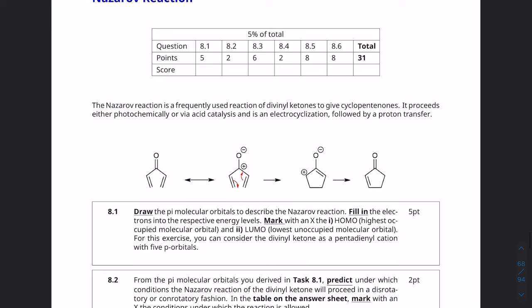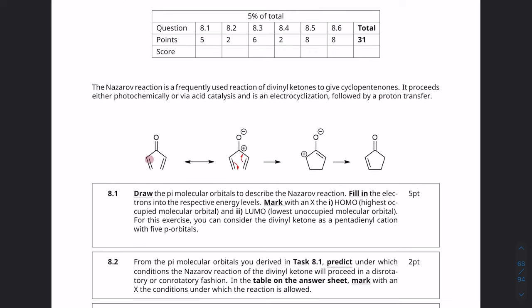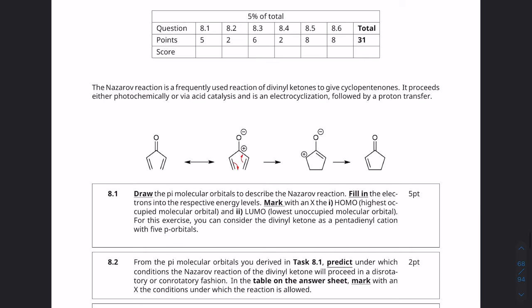It starts off by explaining basically what it is. So if you have a double alpha beta unsaturated ketone like on both sides then it can do resonance to form the zwitterionic structure and you can do a four pi electrocyclization to form a five-membered ring which upon proton transfers forms this alpha beta unsaturated cyclopentenone.